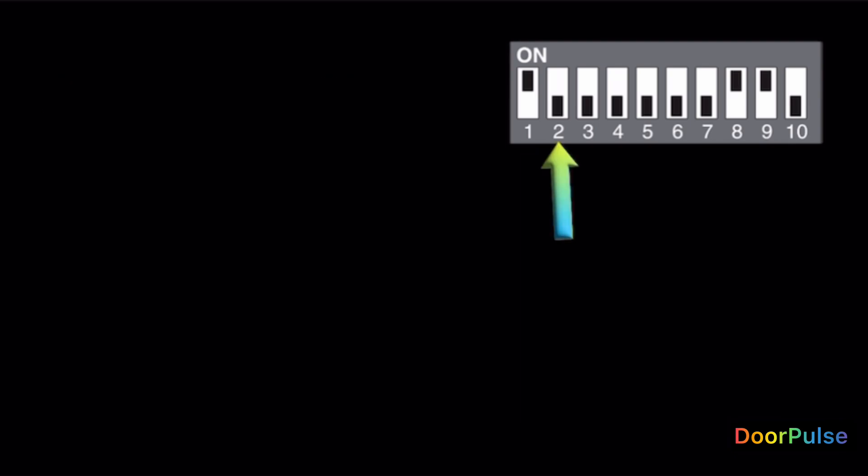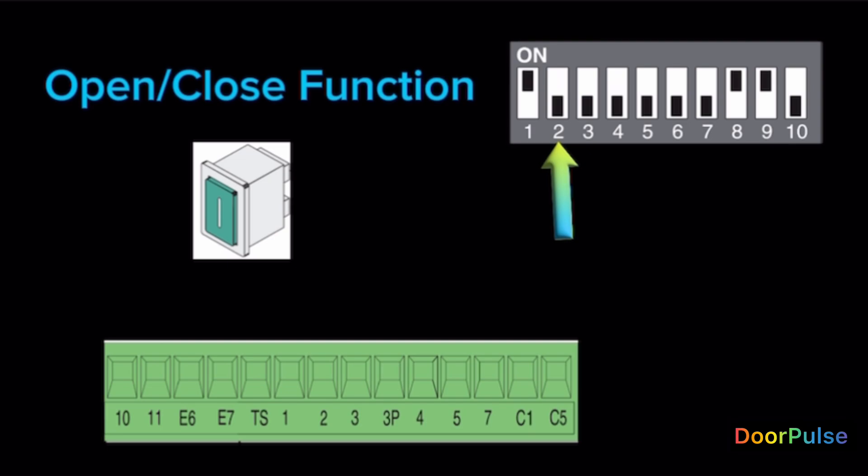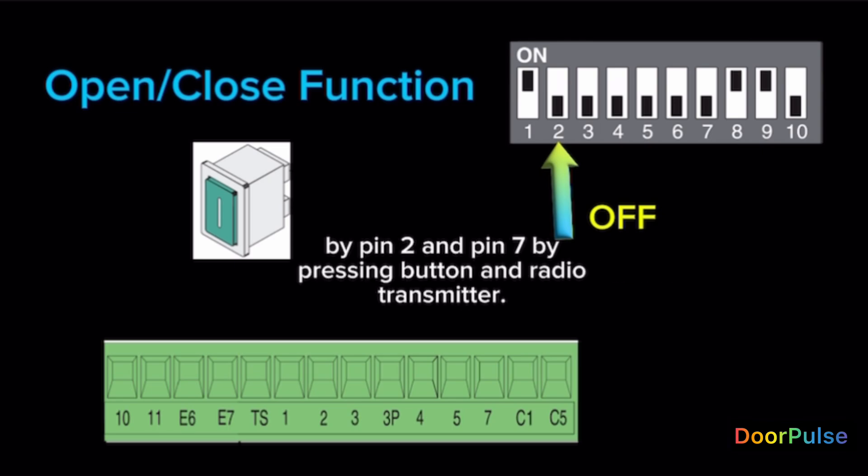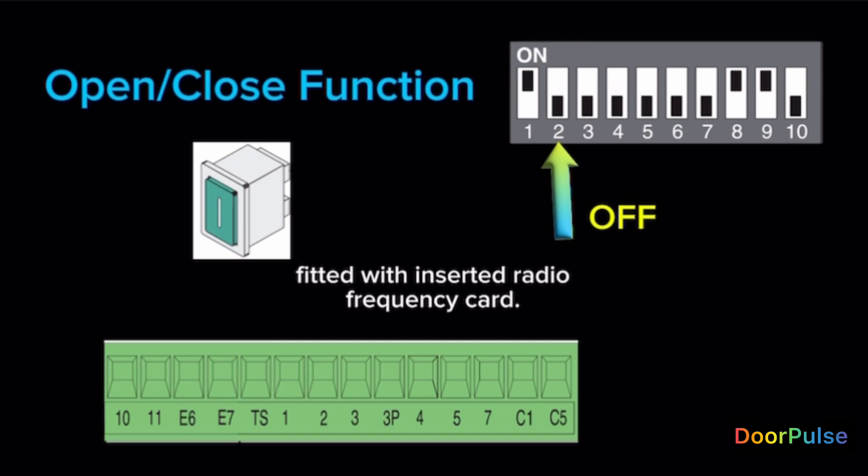Switch 2. Open and close function with pin 2 and pin 7. Switch 2 OFF. Just open and close function. Activate by pin 2 and pin 7 by pressing button and radio transmitter fitted with inserted radio frequency card.